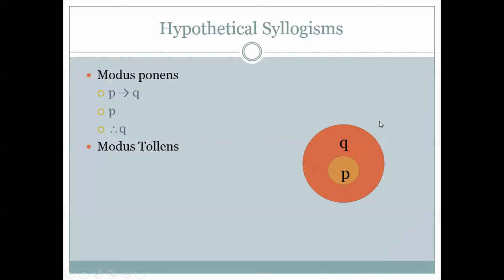Think about it this way: if P then Q means if you're in P, you're definitely in Q. Does that mean if you're not in P, you won't be in Q? No — you don't know how big Q is. But if you're not in Q, are you outside of P? Yes, definitely. Because if you were in P, you'd be in Q. So: if P then Q, not-Q, therefore not-P. The tilde symbol means 'not,' and the arrow means 'if-then.'